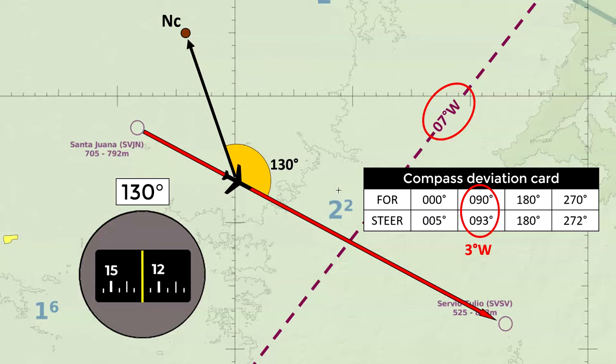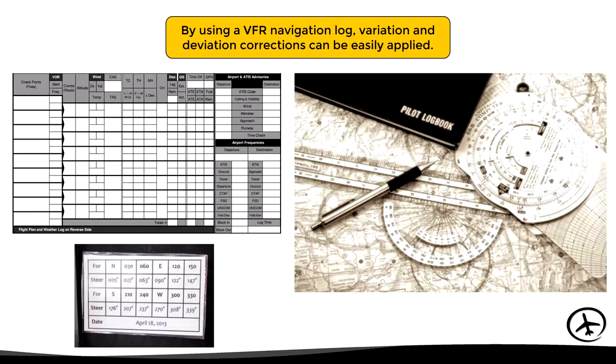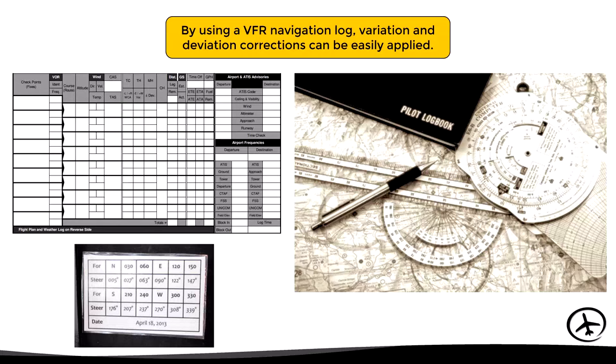This was just a quick example of how variation and deviation are used in practice. These corrections are normally applied using a VFR navigation log during flight planning, since there are other variables to take into account such as wind and true airspeed. We will deal with that in detail in the general navigation videos.